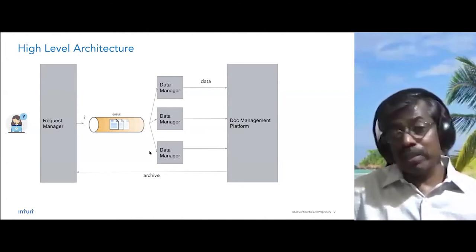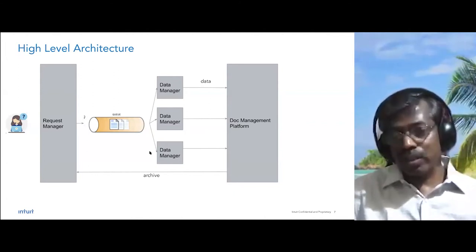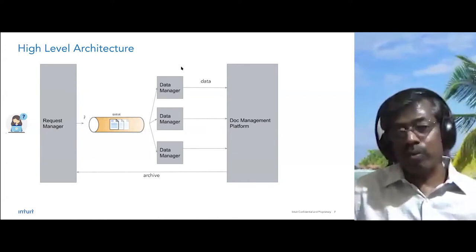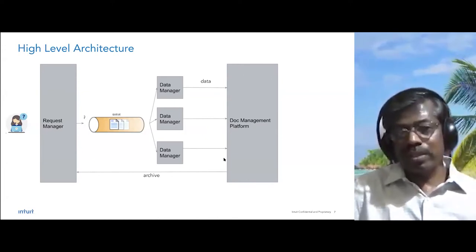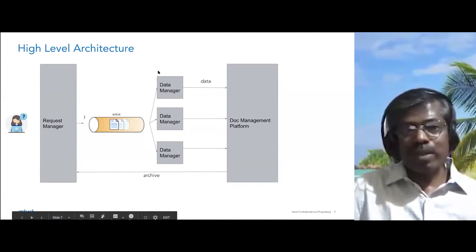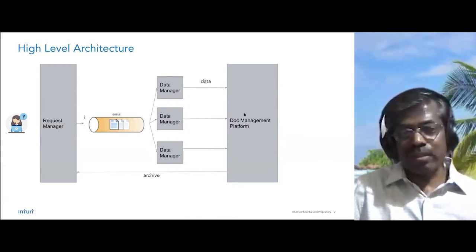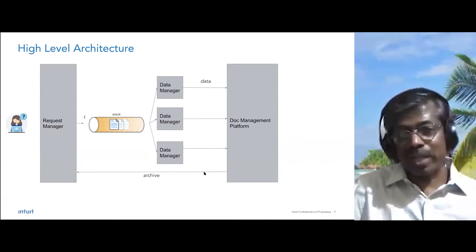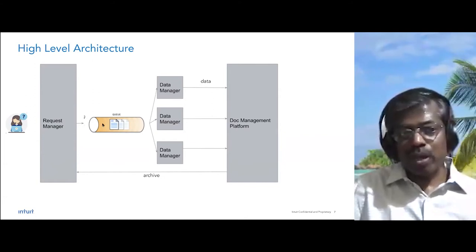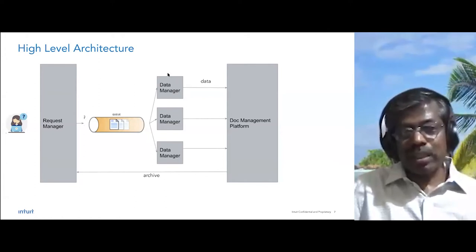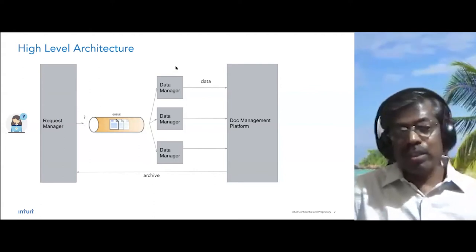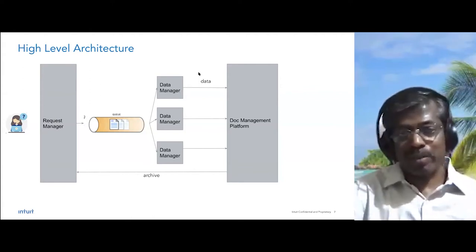Since there are many domains within Intuit's personal finance products that handle customer data, individual domains each have a data manager so they can focus on their own work. The fourth component is the document management platform. As individual data managers collect data, they publish it to a central document management platform so the information can be archived and provided to the customer in the case of an access request. For delete requests, the same flow — from request manager to queue to data manager — triggers individual services to perform the delete operations.